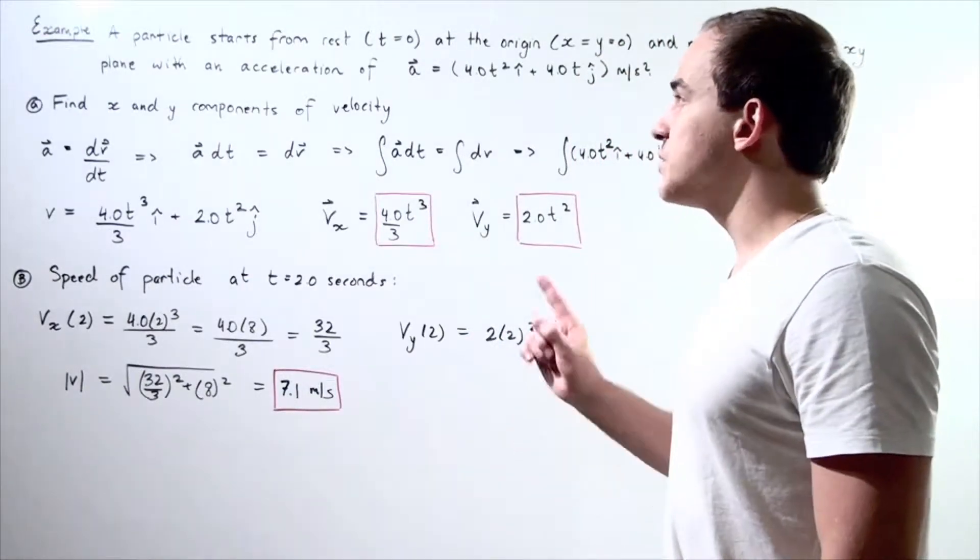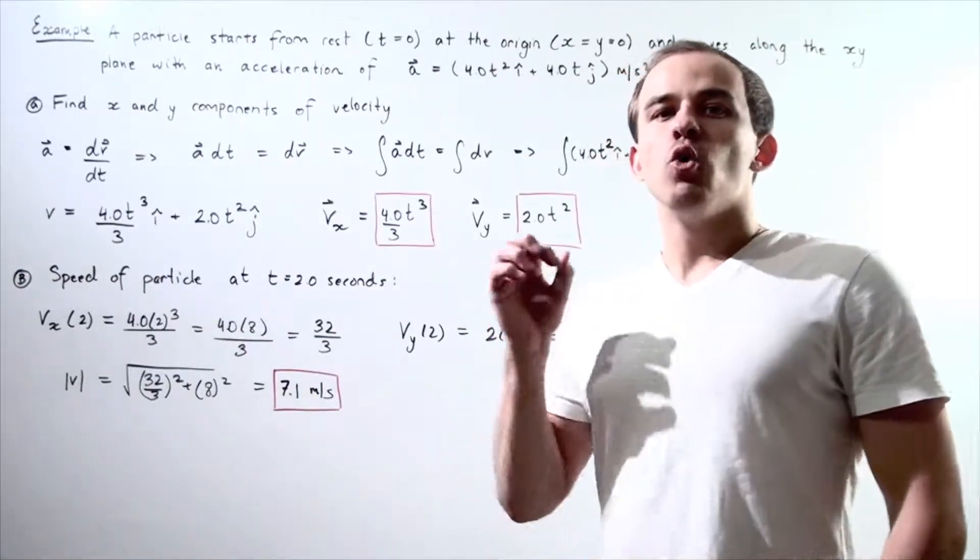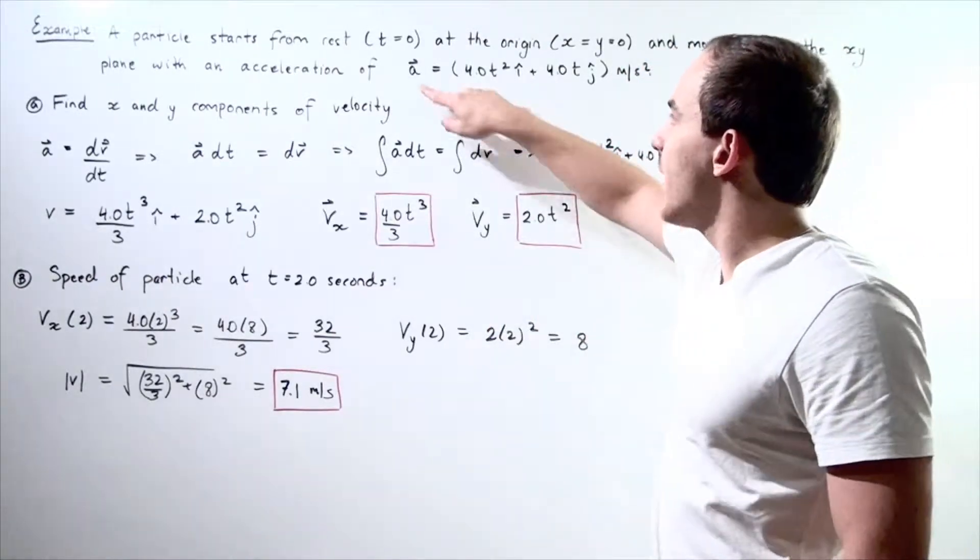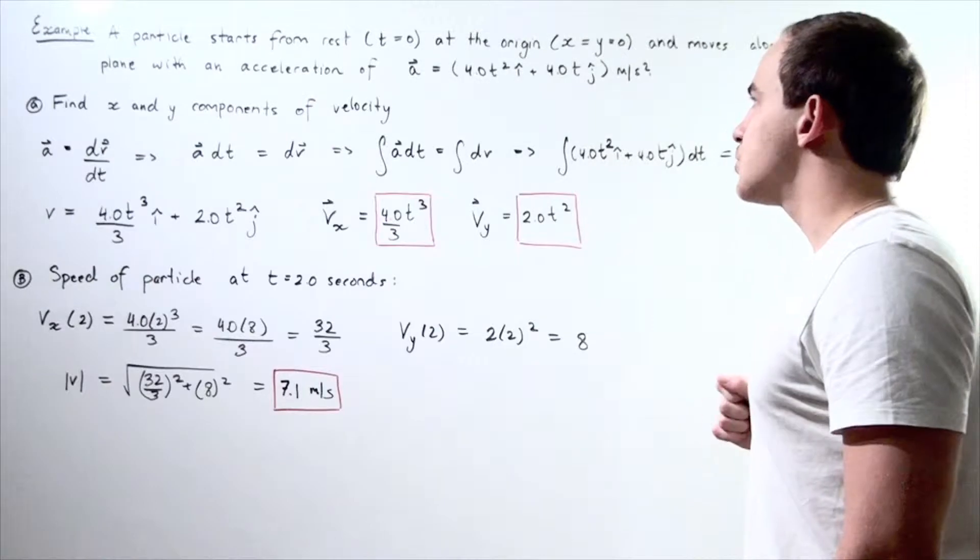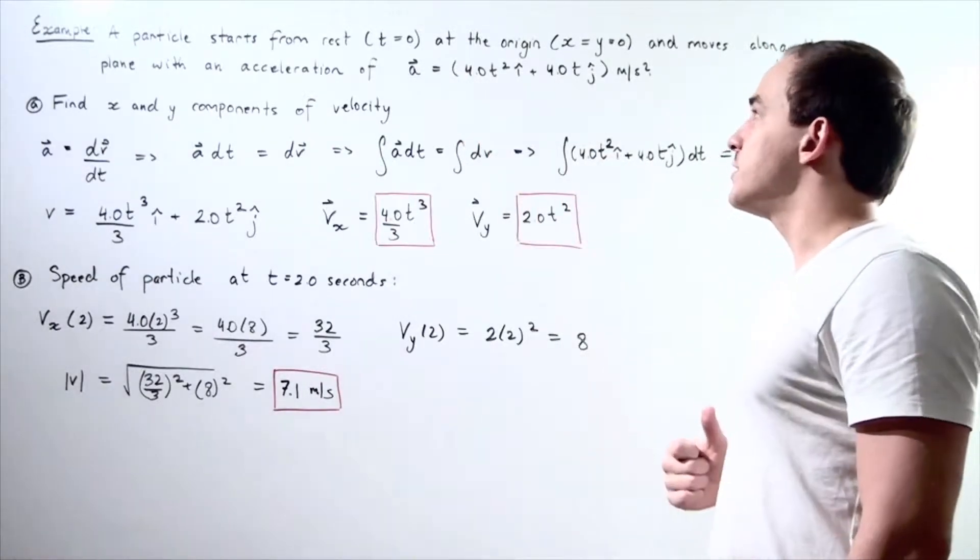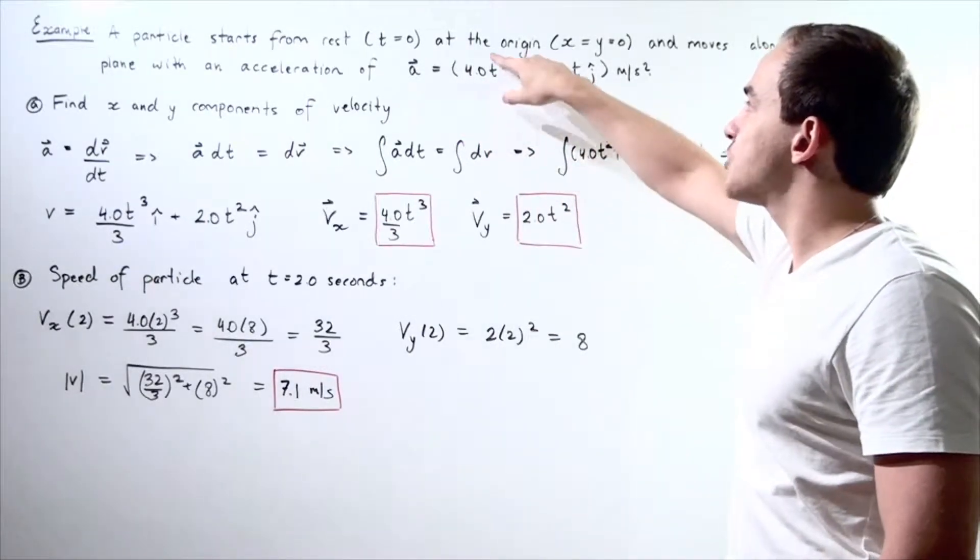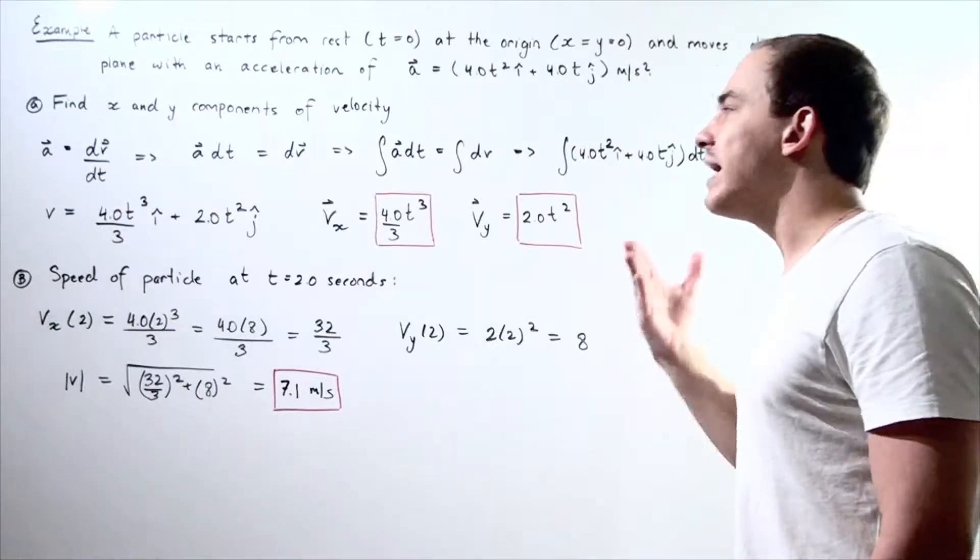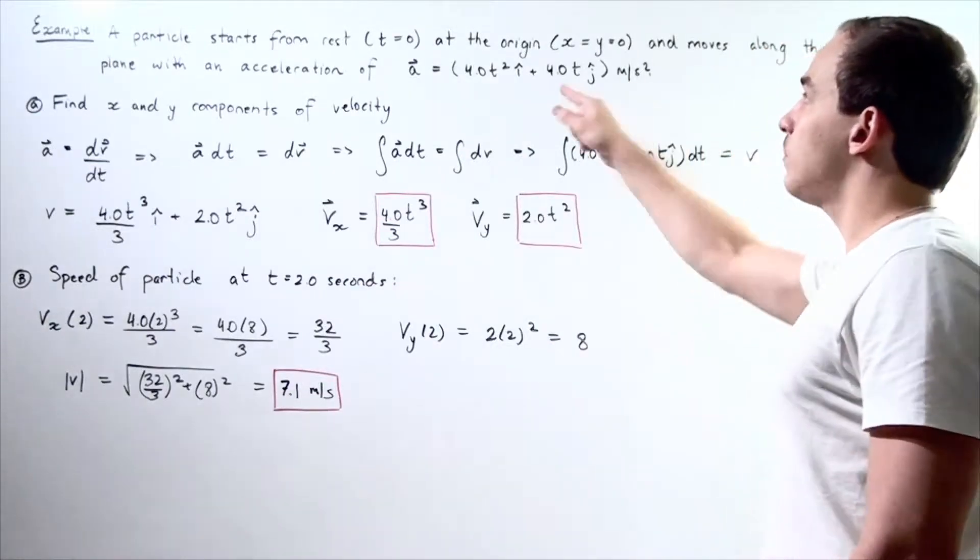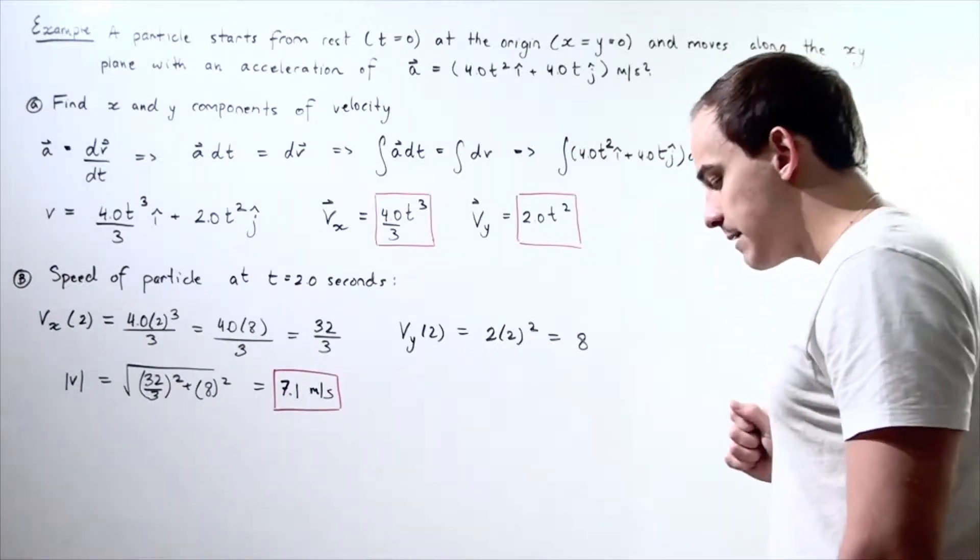and moves along the xy plane with acceleration given by the following equation. So my x component term is 4.0t squared times i hat, and my y component vector is 4.0 times t times j hat.